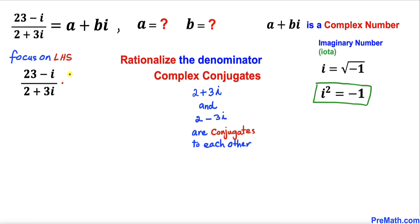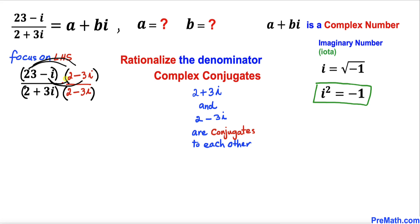We are going to multiply and divide by its conjugate: multiply by 2 minus 3i and divide by 2 minus 3i as well. Now let's multiply the complex numbers on the top using double distribution, giving us 46 minus 69i minus 2i plus 3i squared in the numerator.